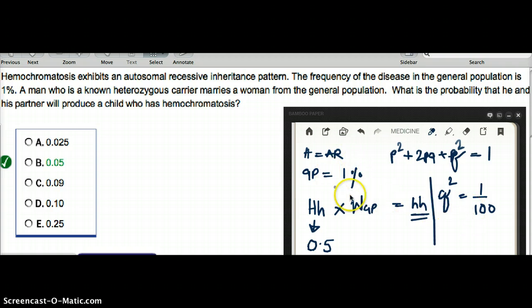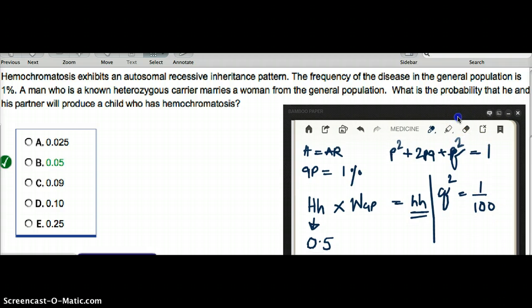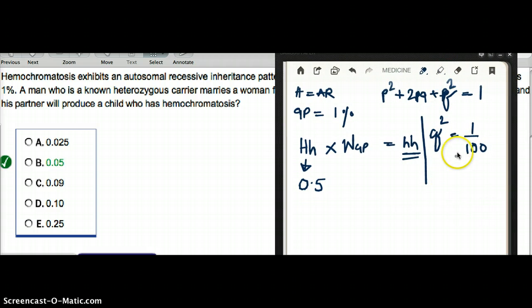Because she's from the general population, the chance of her being a carrier of hemochromatosis is 1%, and so the frequency, q², is equal to 1 by 100. So what I want to do is find the probability of this woman being able to pass on the hemochromatosis gene. So I want to find the value of q, which is the probability for having hemochromatosis. So q equals square root of 1 by 100.